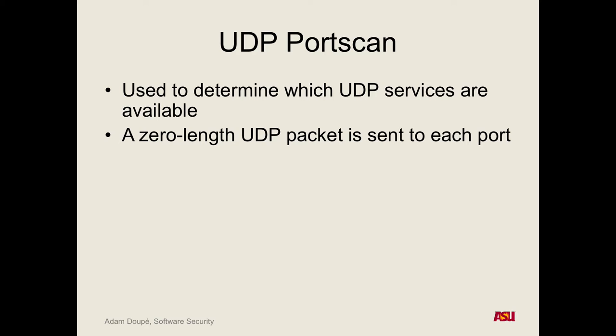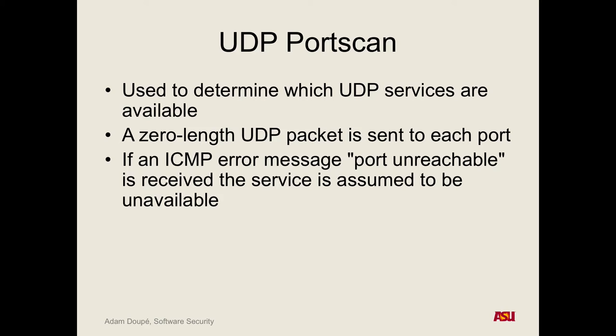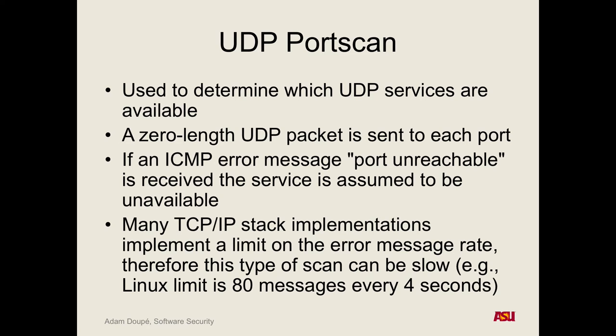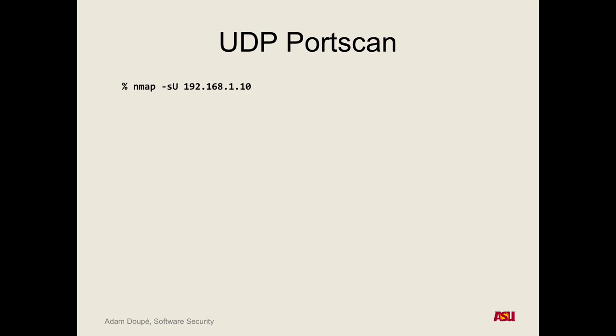Actually, there are ICMP error messages — some systems will send a port unreachable message if you send a UDP packet to a port that's not listening. That gives you good negative confirmation: if you don't receive a port unreachable message, you know something is listening on that port. Unfortunately, a lot of IP stacks limit the error message rate that can be sent. So you can't just send 65,000 UDP packets at once — you have to space it out to stay within the error message rate to make sure you're constantly getting error messages back.